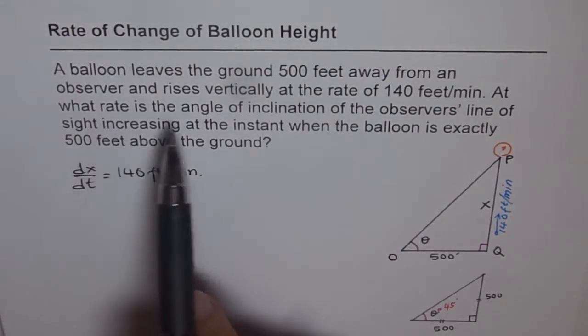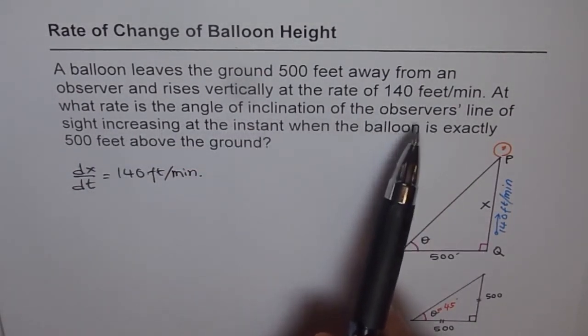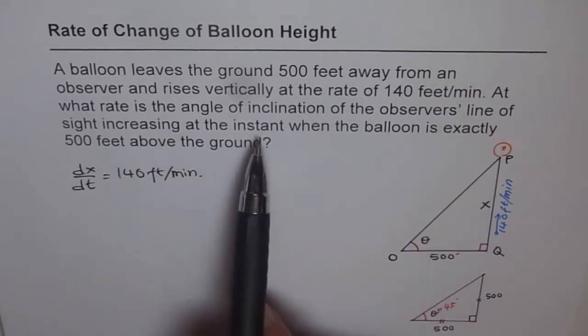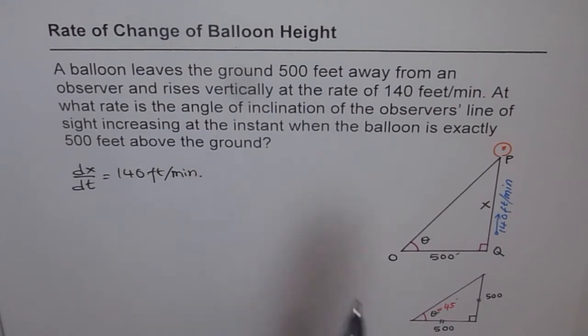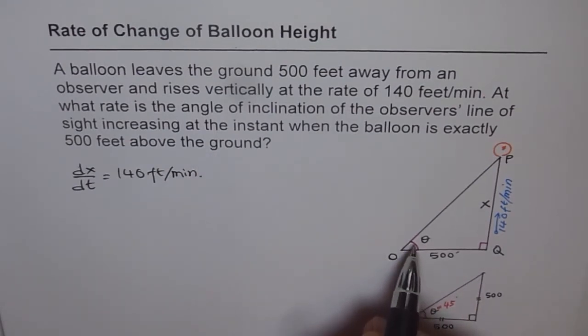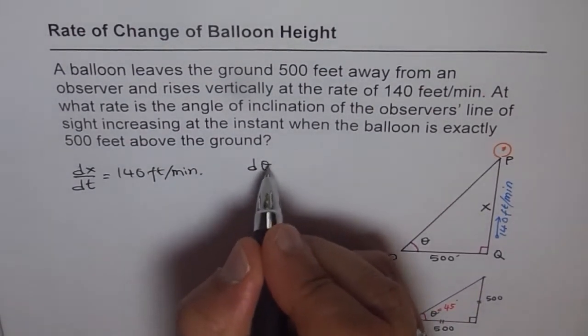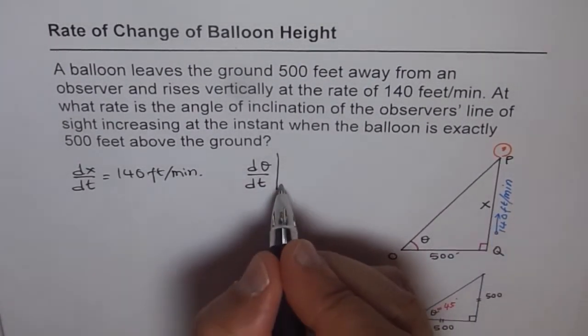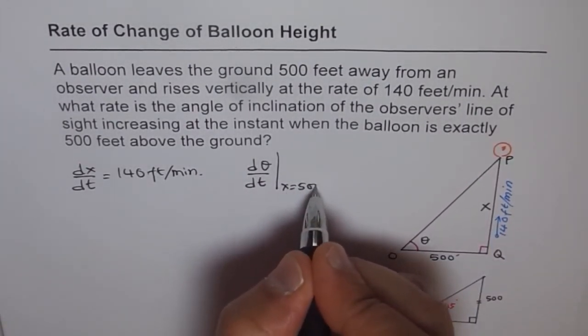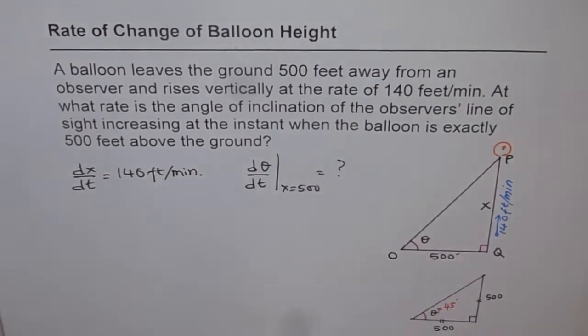At what rate is the angle of inclination of the observer's line of sight increasing at the instance when the balloon is exactly 500 feet above the ground? So let that angle be theta. The rate of change of angle dθ/dt when this x value is 500 is what we need to find.